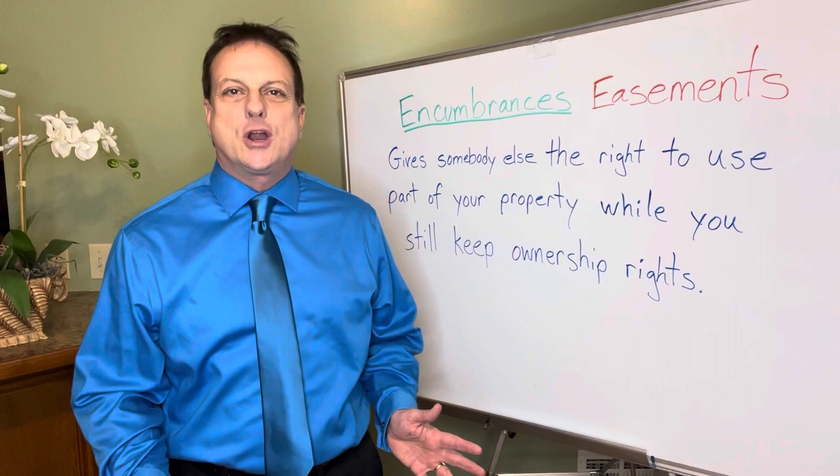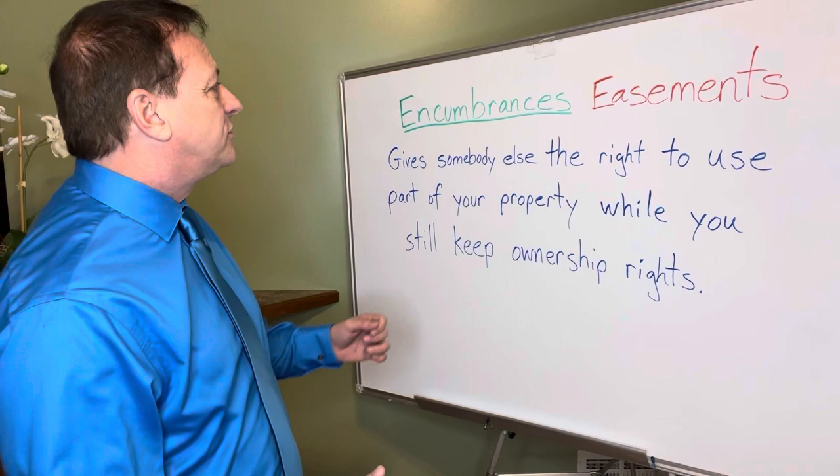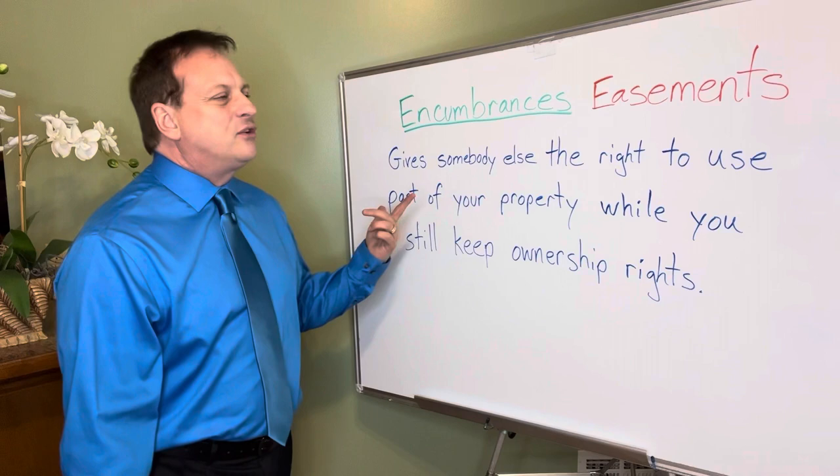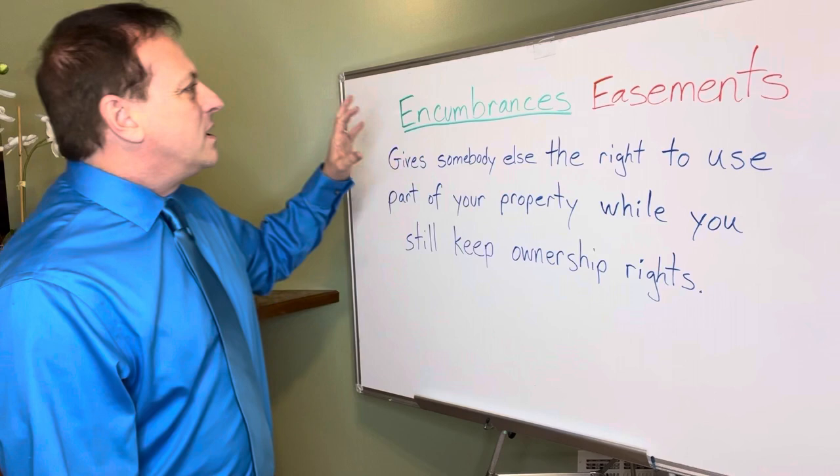My jacket was becoming an encumbrance — I had to take it off because it was being a burden. It was limiting my ability to move. Because the jacket became an encumbrance, it had to go. That's also a gimmick to help you remember what an encumbrance is: it's something that burdens or limits the title and the ability to transfer ownership.